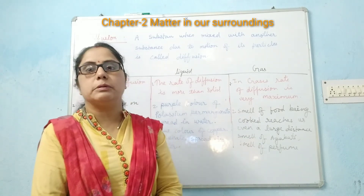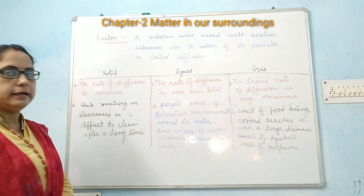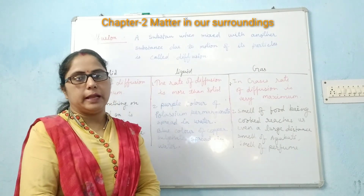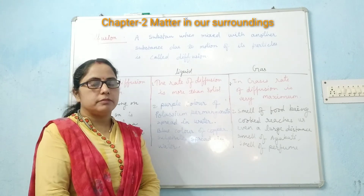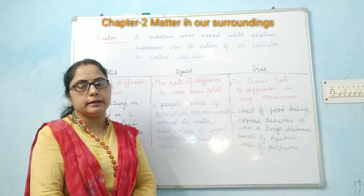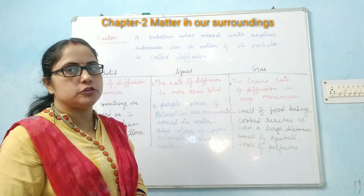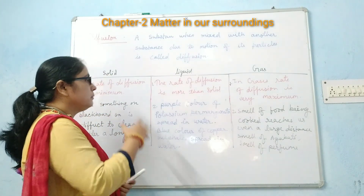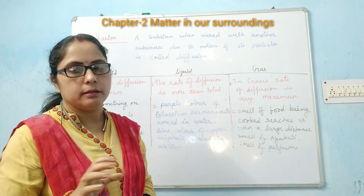An example of diffusion in solid: when you write something on a blackboard and leave it uncleaned for a long time, you will find that it is difficult to clean afterwards, because the particles of chalk have mixed with the blackboard, making it hard to clean.